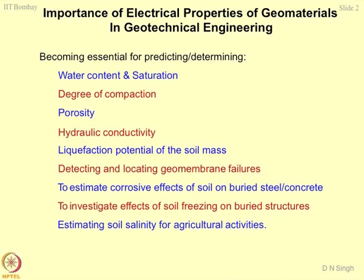Detecting and locating geomembrane failures is another application — this is the only technique which can be applied to determine the extent of leakage or failure of geomembranes, and where they exist. You can find out the location of cracks or failures of geotextiles or geomembranes if you know their electrical properties. Estimating corrosive effects of soil on buried steel and concrete is another use, where electrical resistivity is a very important parameter.